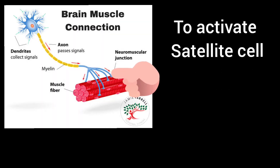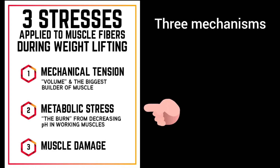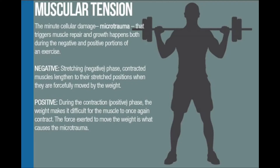Now, there are 3 mechanisms in the satellite cells. Number 1: Muscle Tension. Number 2: Muscle Damage. Number 3: Metabolic Stress. That's what we'll talk about now.